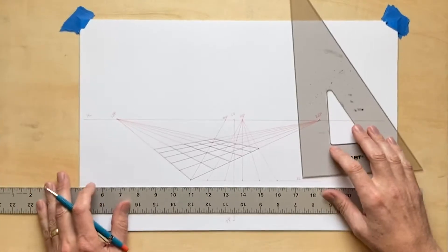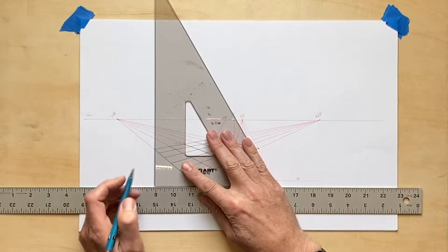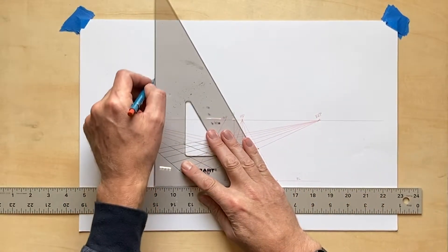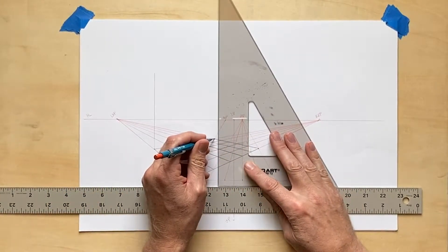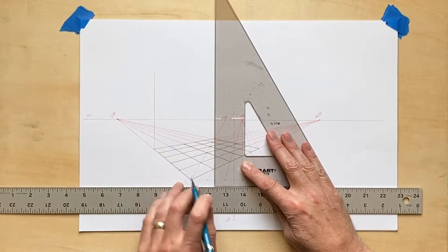I'm going to start by drawing a set of transversal lines at each corner of the floor plane. Remember transversal lines are vertical lines and in two-point perspective they go straight up and down.